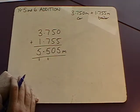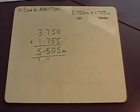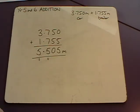So my answer is 5.505 metres and that's the total length of my car and trailer. That's how we add 5 digit numbers and decimals to 3 decimal places in Year 5 and 6.